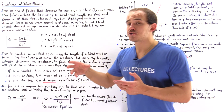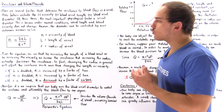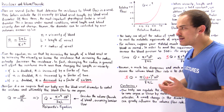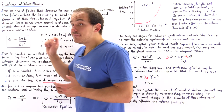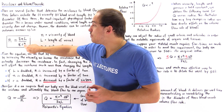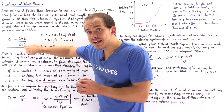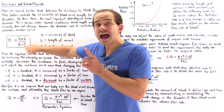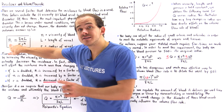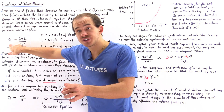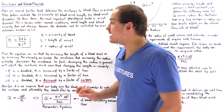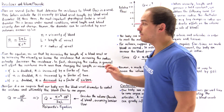By increasing our radius, we increase the denominator and that decreases our resistance, so we have an inverse relationship between resistance and radius. In fact, changing our radius affects resistance the most, because the radius is raised to the power of 4.